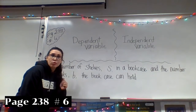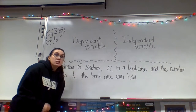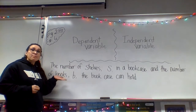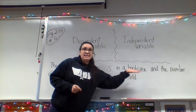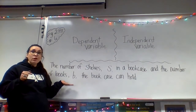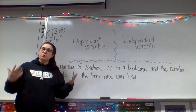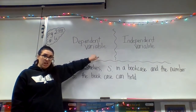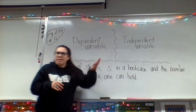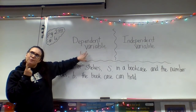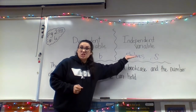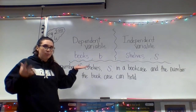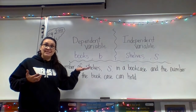Moving right along to problem number six, still on page 238. We're identifying the dependent and independent variable again. Our next scenario is the number of shelves in a bookcase and the number of books that can fit in that bookcase. What can go bigger on its own and impact the other side? The number of shelves in the bookcase is going to be independent, and the amount of books that can be supported on those shelves will be dependent.